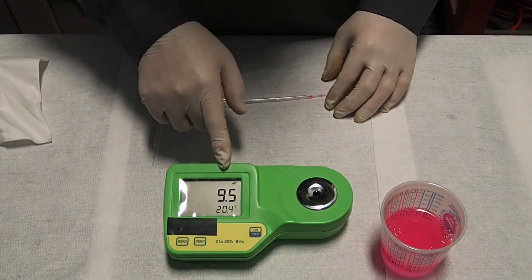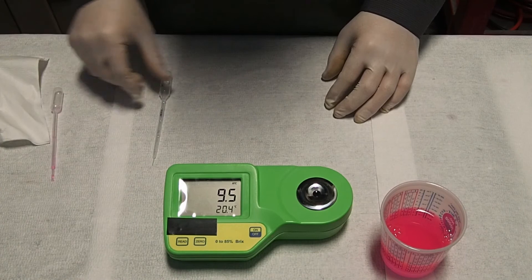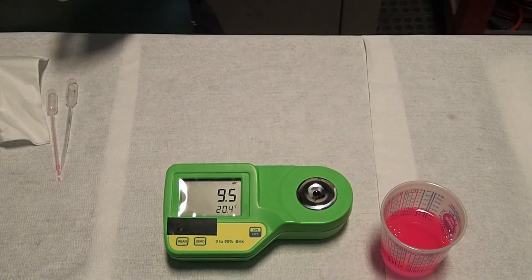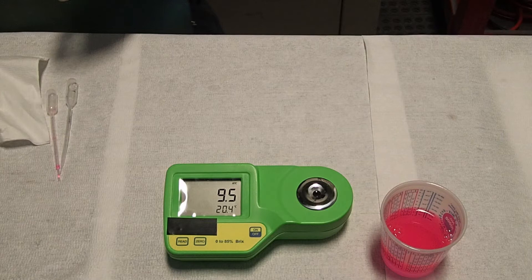9.5 Brix. Keep in mind this value. And remember, to store or reuse the refractometer, we need to clean the window sample using a clean towel, trying to remove all the residual emulsifier. We need to ensure the window sample is clean.